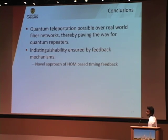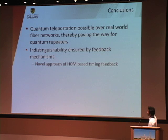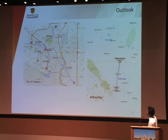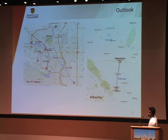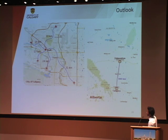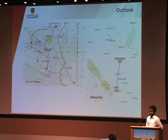To conclude, we have shown that quantum teleportation is possible over real-world fibre networks, paving the way for quantum repeaters. Indistinguishability is ensured by the feedback mechanisms employed. In the outlook, we are planning a star-type network in the city of Calgary, and ultimately to connect two major cities in the province of Alberta — Calgary and Edmonton, which are about 300 kilometres apart — by the use of quantum repeaters. Thank you.